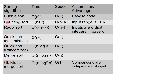Then we saw counting sort. Counting sort can sort in time O(n + k), under the assumption that the input range is between 0 and k — so you're sorting numbers between 0 and k. If you think of k being of the order of n, this is linear time in n. And the space has the same form: O(n + k).